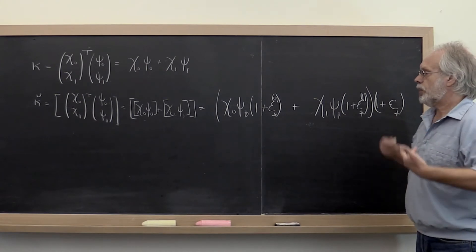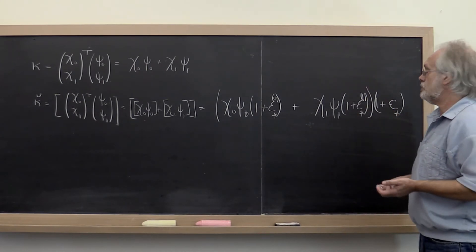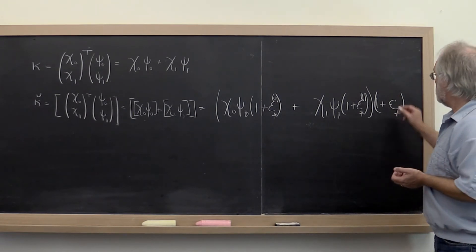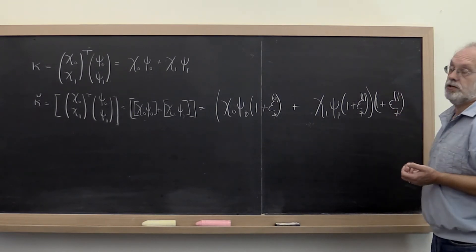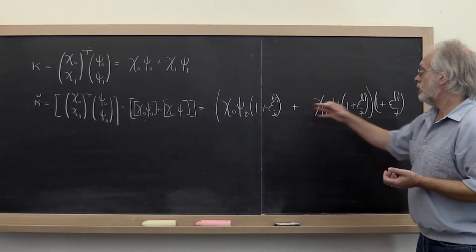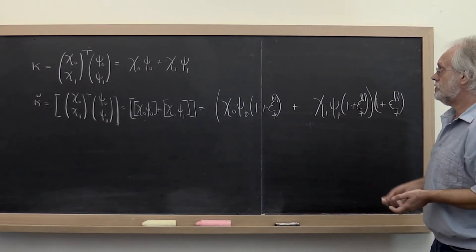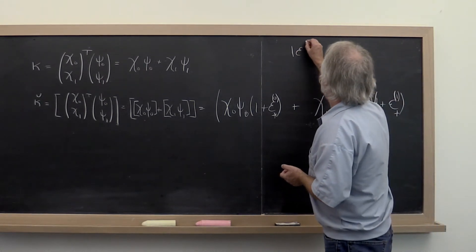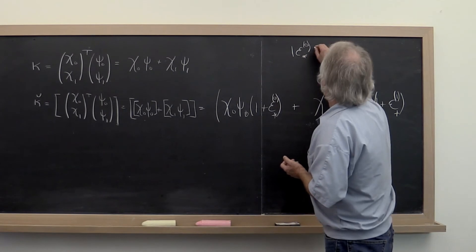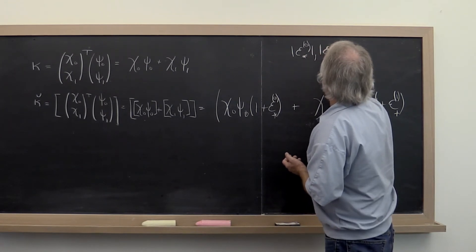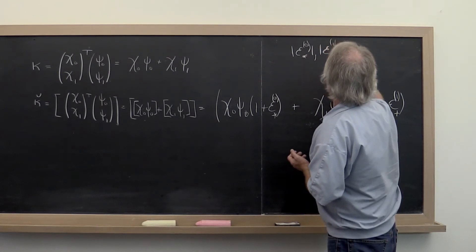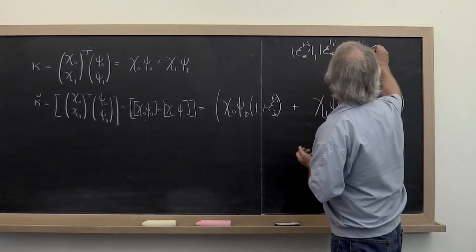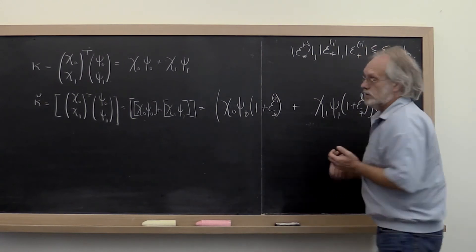Since we're going to extend this to vectors with more than two elements, we'll end up with more of these epsilons as well, so we're going to put a superscript on here as well. Notice that all of these epsilons in magnitude are bounded by the machine epsilon.